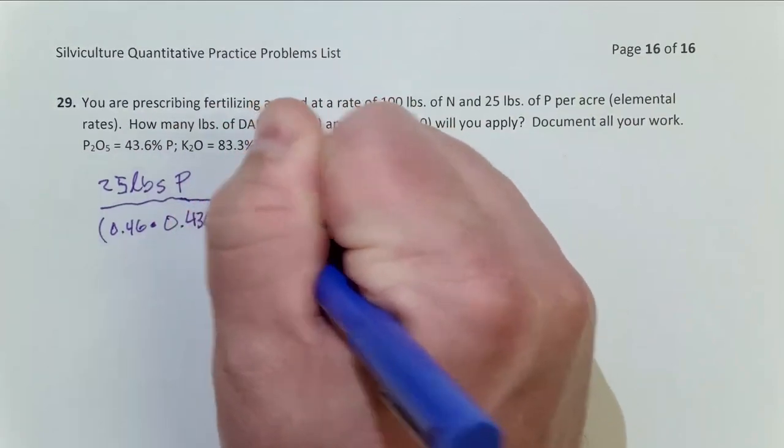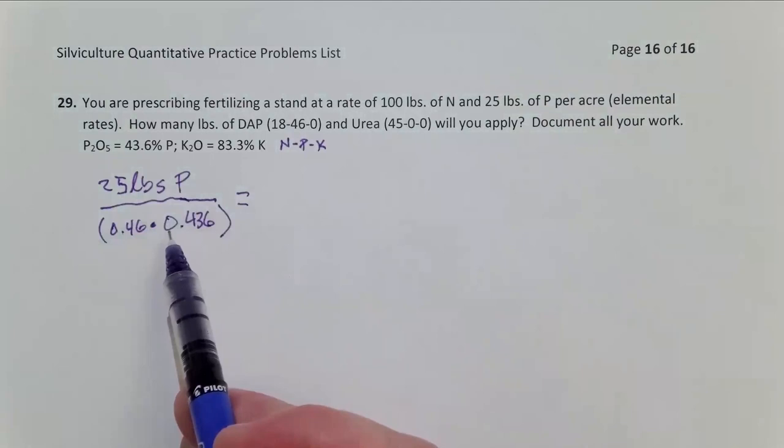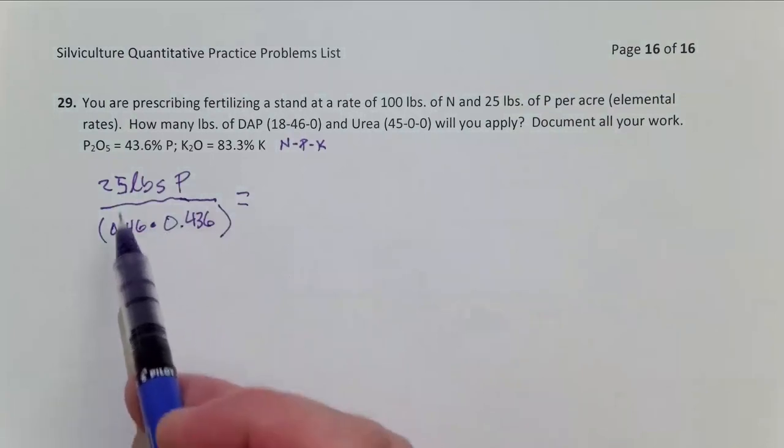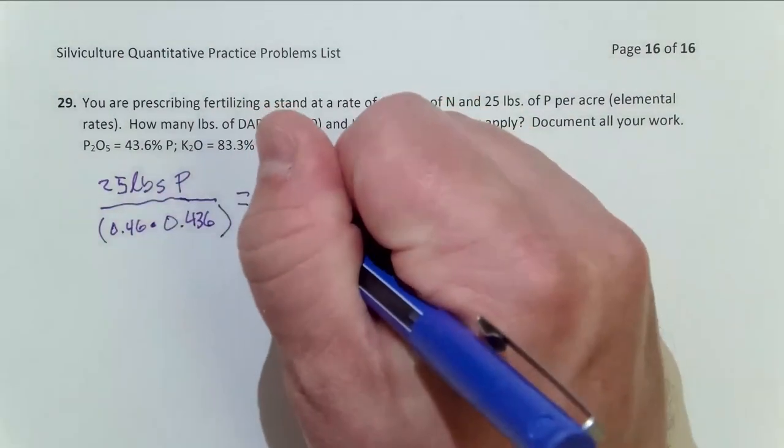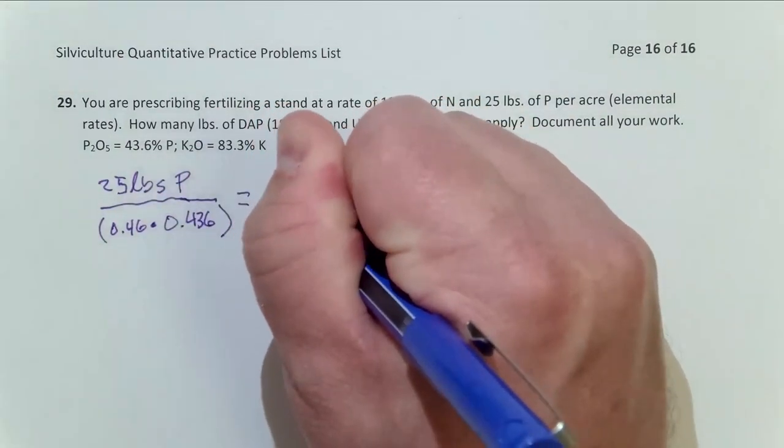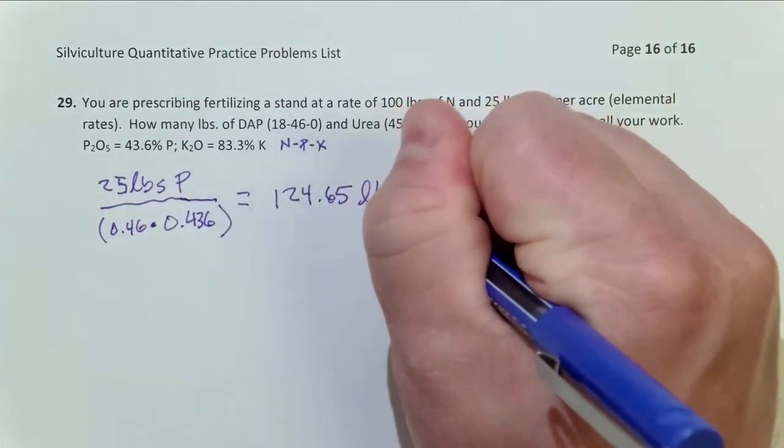And so order of operations here, multiply those two together. We get something around 0.2 and then divide 25 by that 0.2. And that's going to give you 124.65 pounds of DAP when you do the plan.